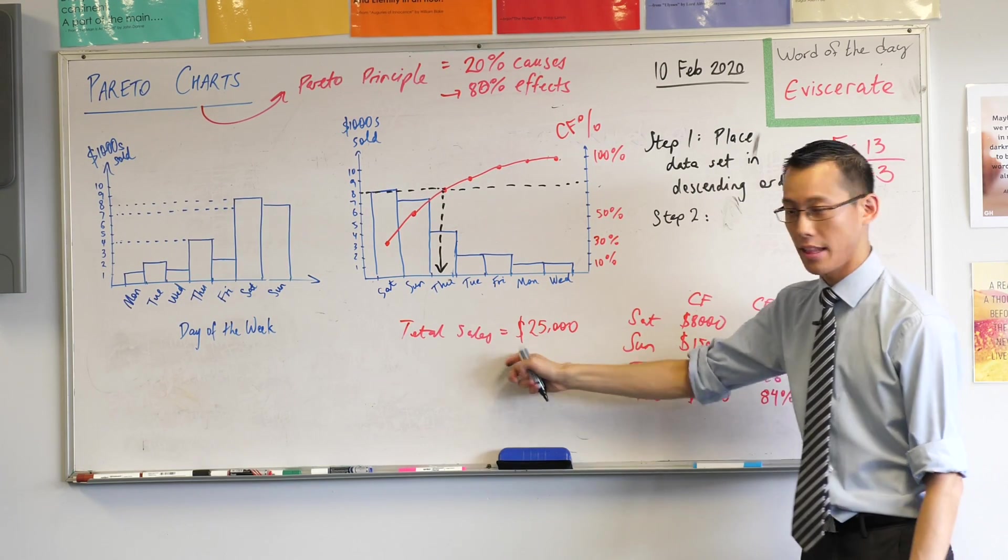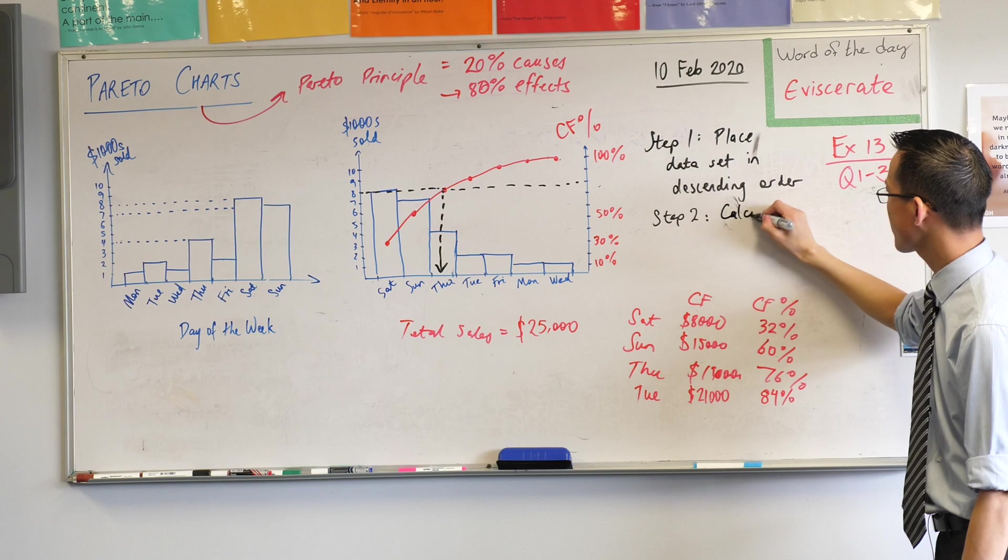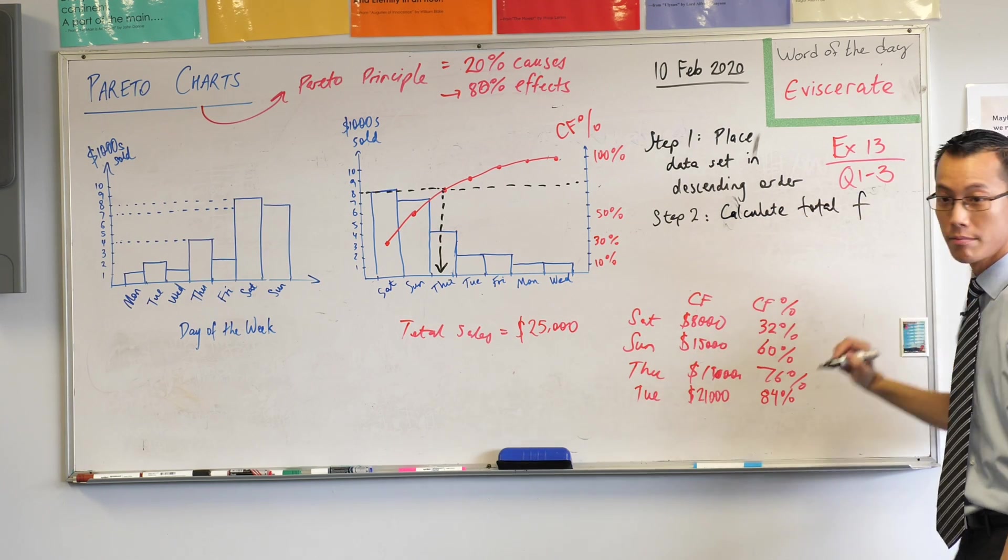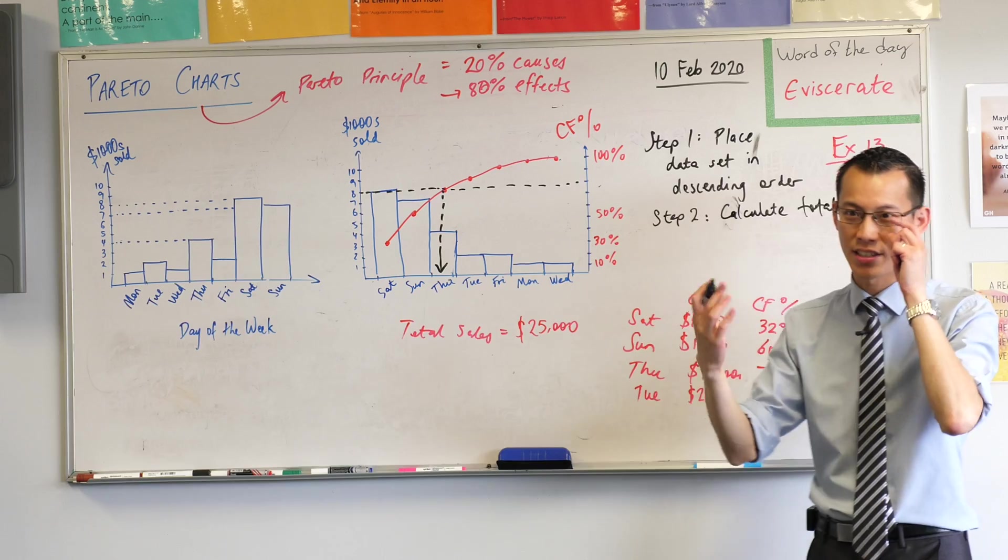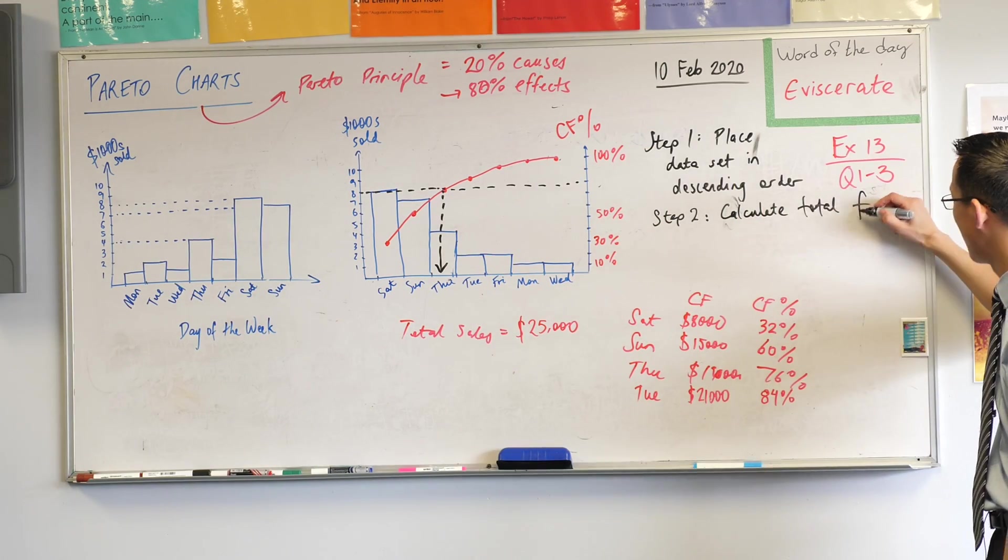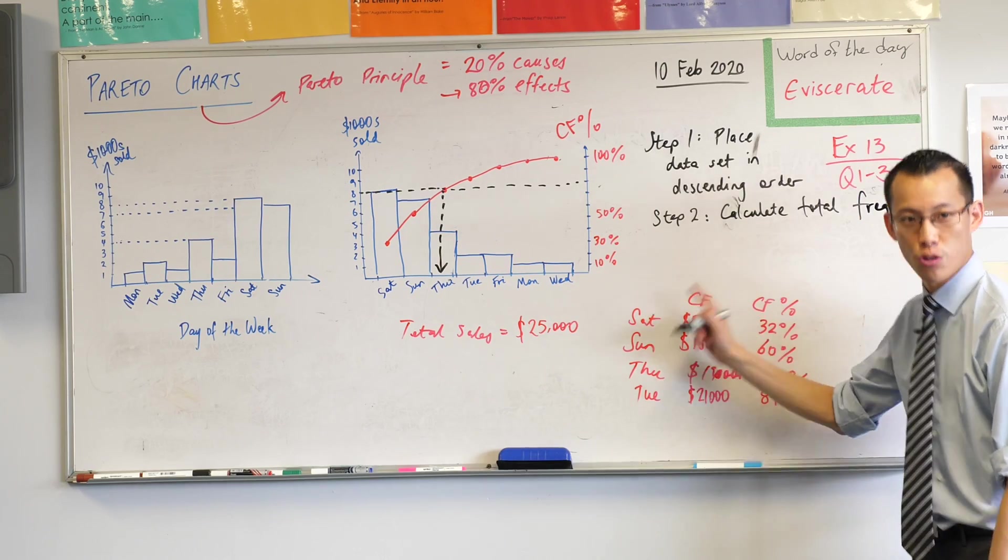Total sales. Total sales in this case. It might be total accidents, total number of patients, whatever. You calculate the total frequency. And then you use that total frequency to work out your cumulative frequency percentage. There's two parts of that. Cumulative frequency. And then the conversion to the percentage.